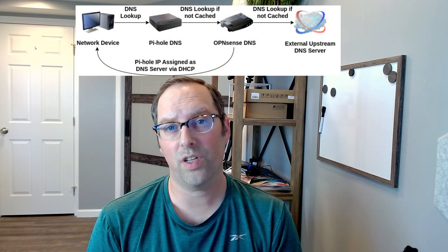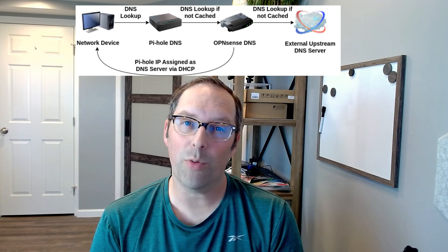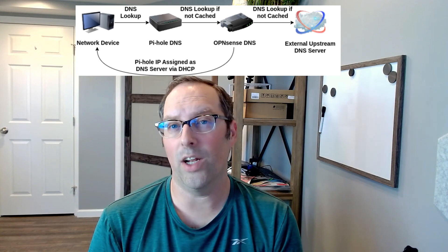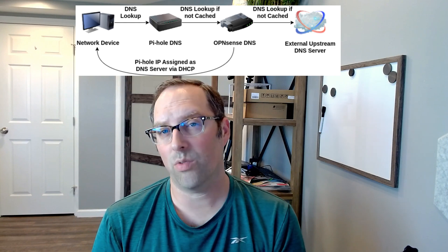I want to show you how to set up Pi-Hole in Proxmox and configure it to work with OpenSense. At a high level, OpenSense will hand out the Pi-Hole DNS server to all network clients, Pi-Hole will use unbound DNS in OpenSense as its upstream server, and OpenSense will use whatever upstream server you have configured. I'll show setup for a single network first, then cover additional configuration for multiple networks or VLANs.